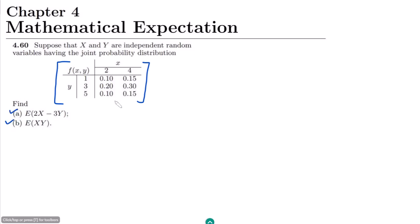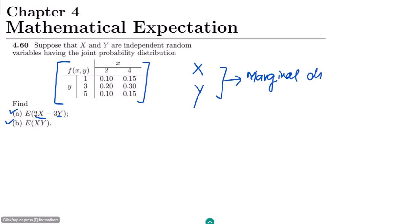First of all, this is the joint probability distribution, but what we want to find out are X and Y which are the marginal distributions. So the marginal distributions are for X and Y.